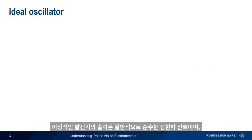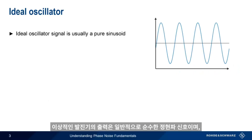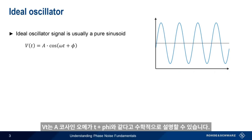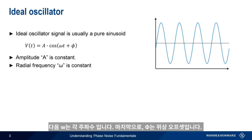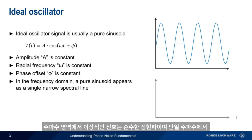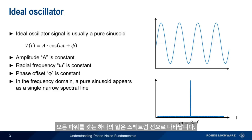The output of an ideal oscillator is usually a purely sinusoidal signal, which we can describe mathematically as V(t) equals A cosine(ωt + φ). In this equation, A, the amplitude of the sinusoid, is a constant. Omega, the radial frequency, and phi, the phase shift or phase offset, are also constant. If we look at this ideal signal in the frequency domain, our pure sinusoid would appear as a single narrow spectral line, with all of its power at one single frequency.